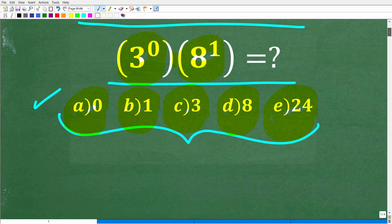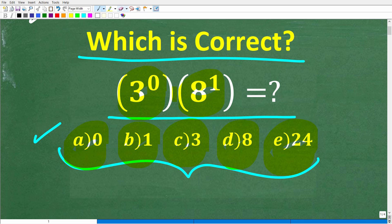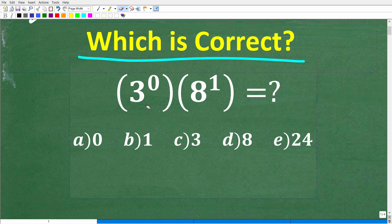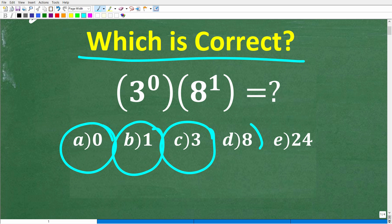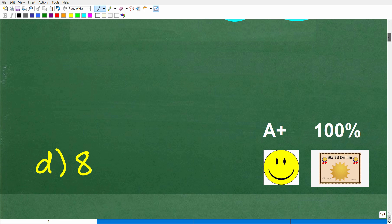Let's take a look at the problem again before I show you the actual solution. We have 3 to the 0 power times 8 to the 1st power. Our choices again: A is 0, B is 1, C is 3, D is 8, and E is 24. The correct answer is D, 8.